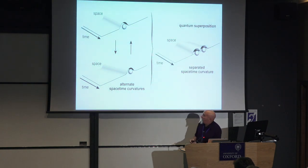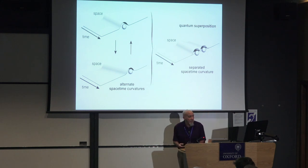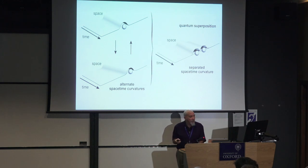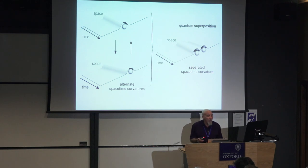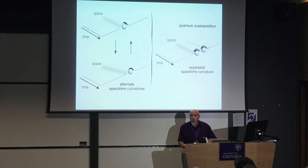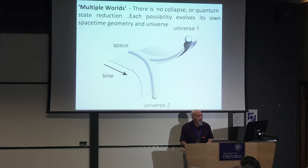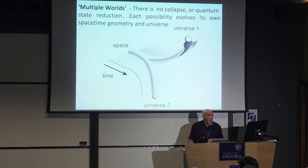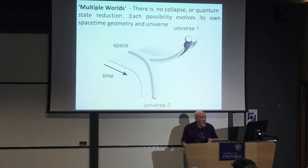Roger mentioned his amazing profound relation with Einstein's relation with spacetime curvature and particle location and how he used that to reconcile quantum mechanics. On the left you see a particle in two locations correlating with two different spacetime curvatures, and on the right you see a superposition where the particle is in two locations and there's two spacetime curvatures. If they were to continue to evolve independently, you'd get multiple worlds. There's no collapse or quantum state reduction; each possibility evolves its own spacetime geometry and universe.